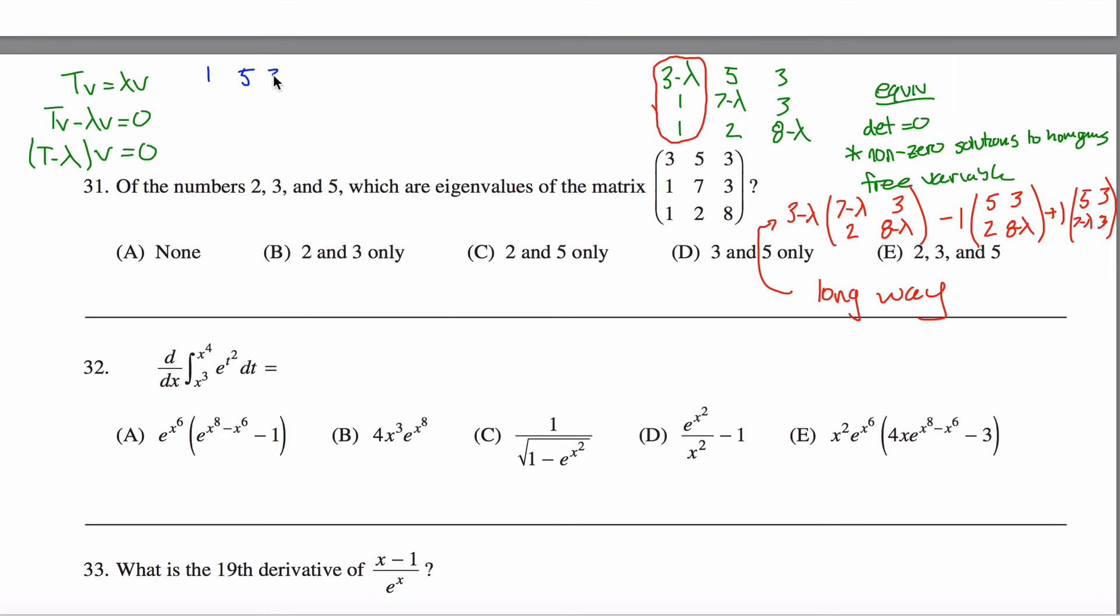So say I subtracted 2 for this first one from all numbers on the diagonal. Well, then I would get 1, 5, 3, 1, 5, 3. Note this was 3 minus 2 and then this was 7 minus 2 and then 8 minus 2 would put a 6 here and I leave everything else alone. And note that if I were to row reduce this, I'd end up with a free variable, right?